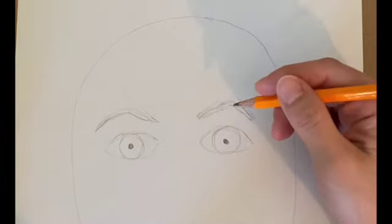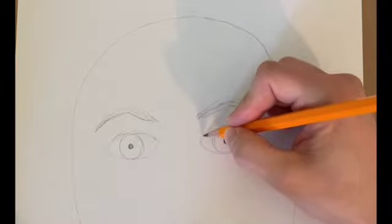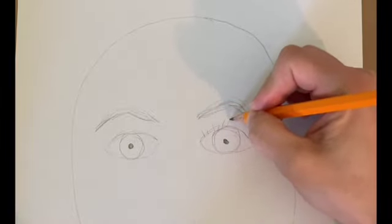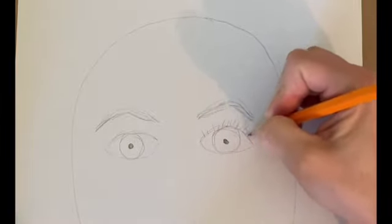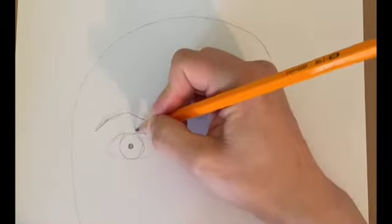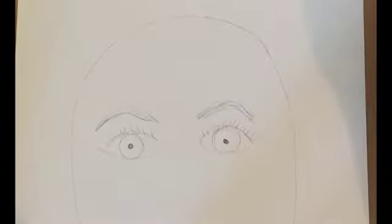Now I'm going to draw my eyelashes, and my eyelashes are little hairs or lines that come up from my upper and lower eyelids, and their job is to protect my eyes from getting dust or small particles in them.